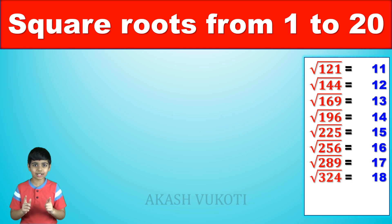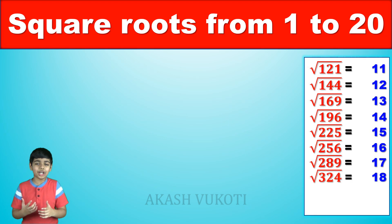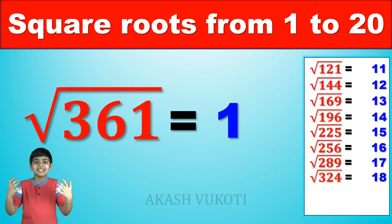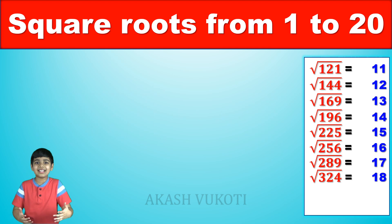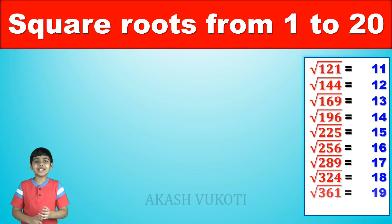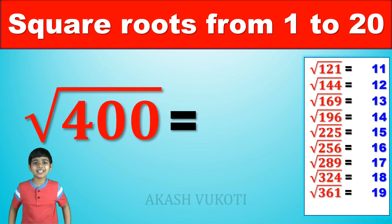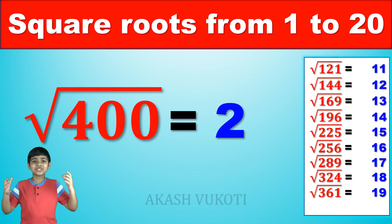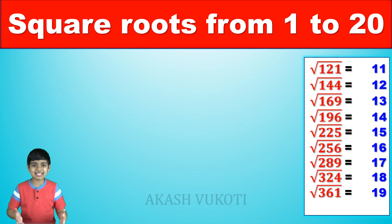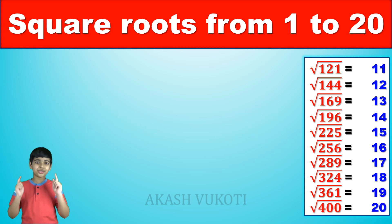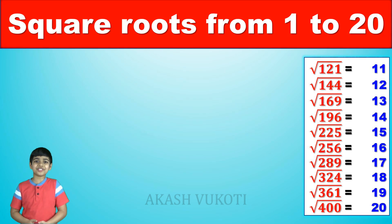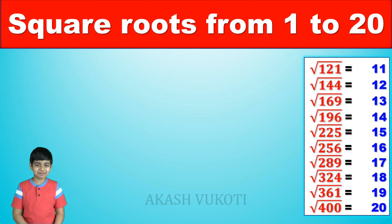We're almost there. The square root of 361 is 19. And finally, the square root of 400 is 20. So those are the square roots whose values are the numbers 1 through 20.